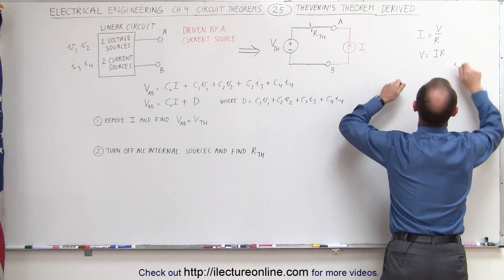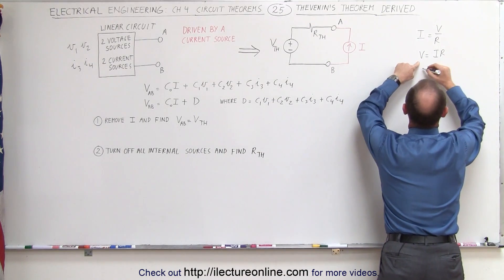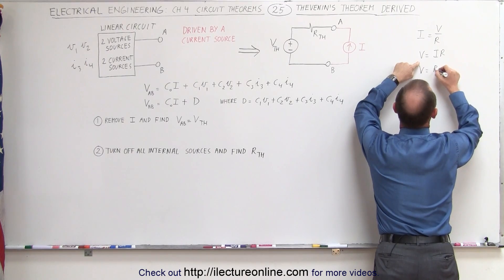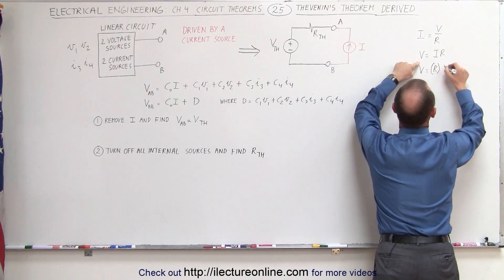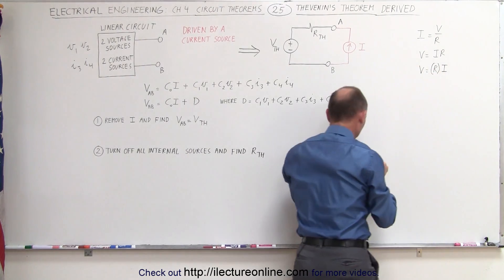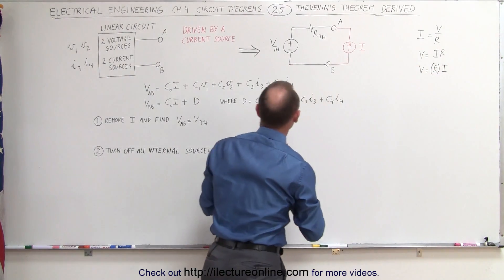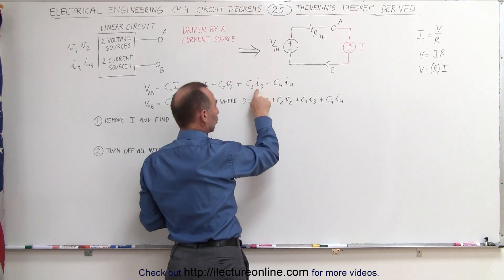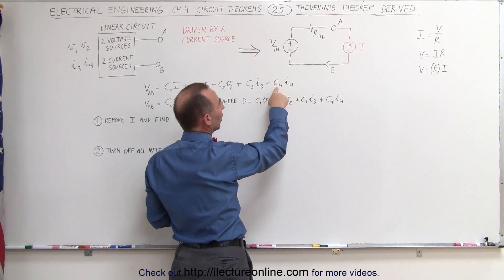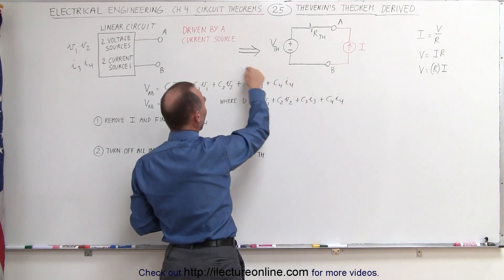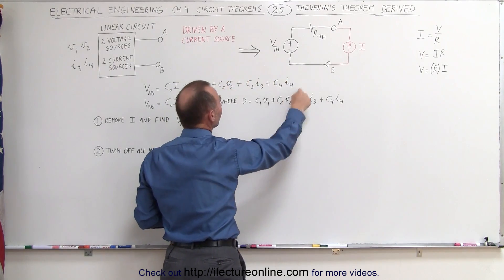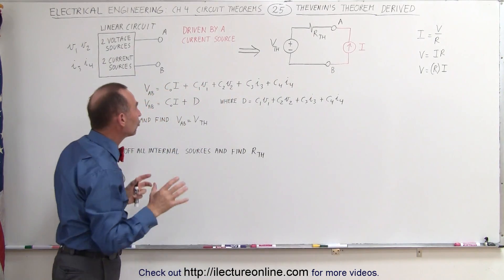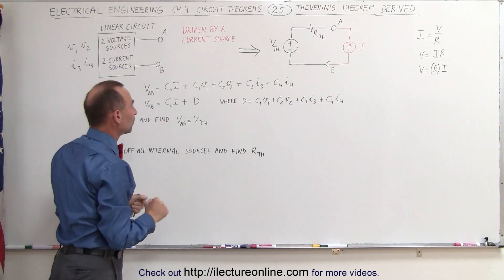Ohm's law says the voltage is equal to some constant R times I. We don't know what R is, so we can say the voltage will be some constant times current source I3 and some constant times current source I4. Now we have the voltage contributions of all four sources interior to the linear circuit.